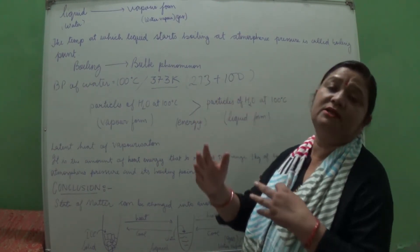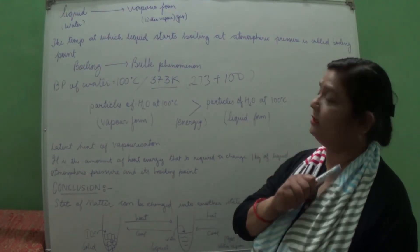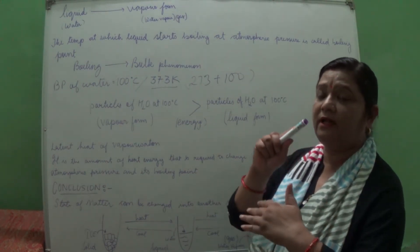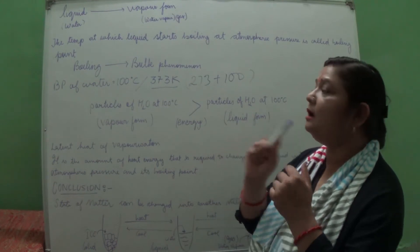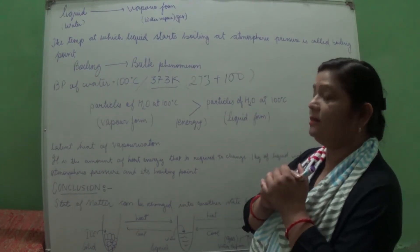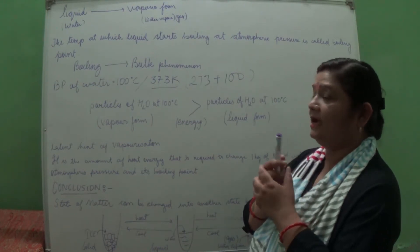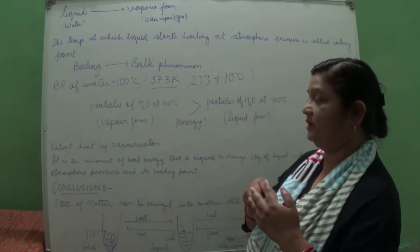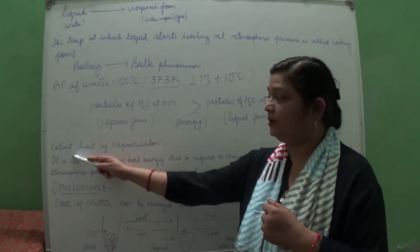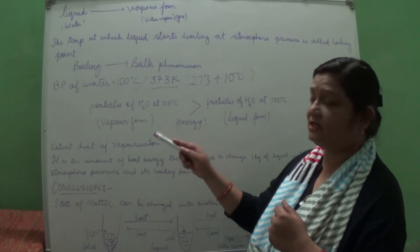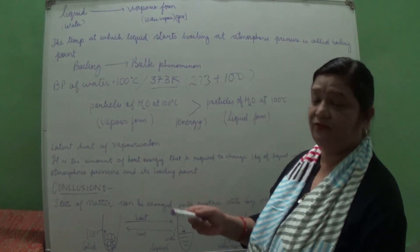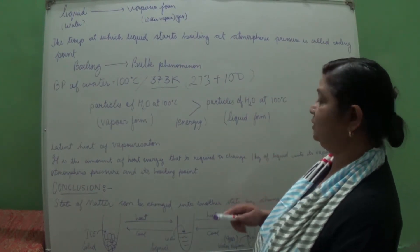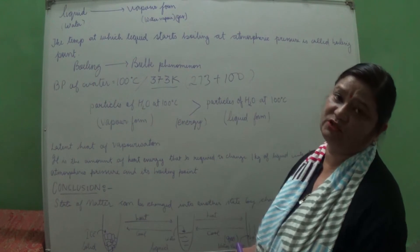Where did the energy go if the temperature does not change on the thermometer? The energy is being used up in converting the liquid into the gaseous form. Again the word 'latent' applies, and since the liquid is being changed into gaseous or vapor form the process is vaporization, giving us latent heat of vaporization. Latent heat of vaporization is the amount of heat energy required to change 1 kg of liquid into its vapor form at atmospheric pressure.